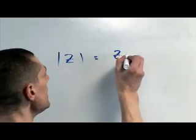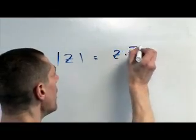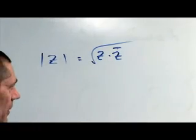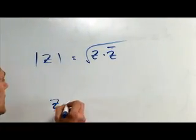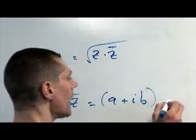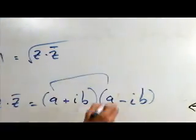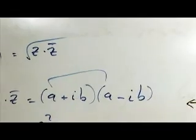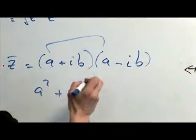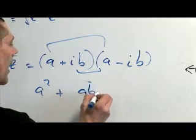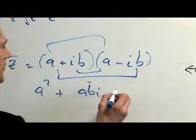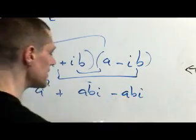z times z-bar is (a + ib) times (a - ib), which equals a^2 - abi + abi. Then it's going to be minus from this contribution, minus abi. As you can see, these terms are going to wash. And then it's going to be minus i^2 b^2.